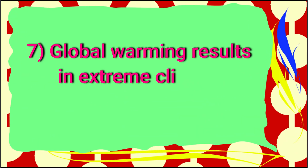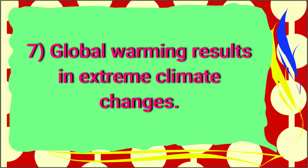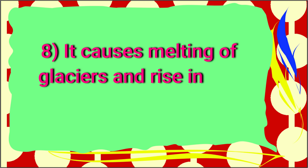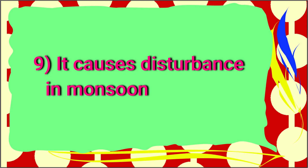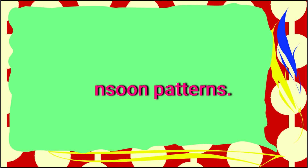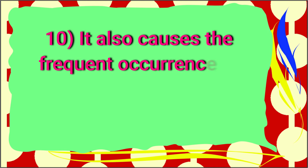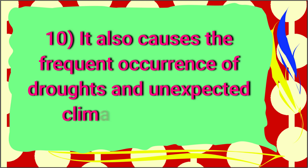Global warming results in extreme climate changes. It causes melting of glaciers and rise in sea level. It causes disturbance in monsoon patterns, and also causes the frequent occurrence of droughts and unexpected climatic changes.